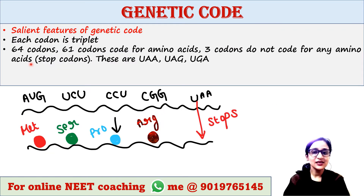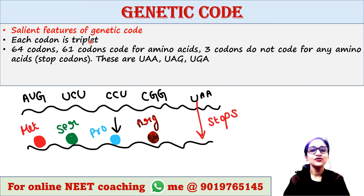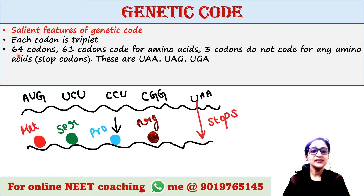Now we will discuss some salient features of genetic code. First of all, each codon is a triplet, meaning each codon contains 3 nucleotides. AUG is a codon which contains 3 nucleotides: A, U, and G. There are 64 codons total.